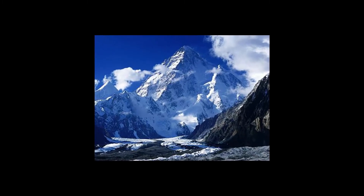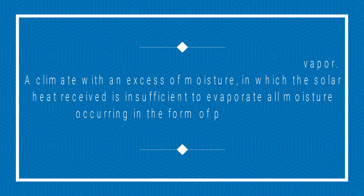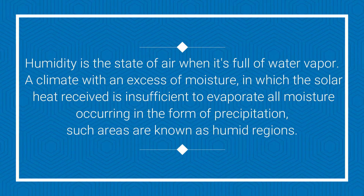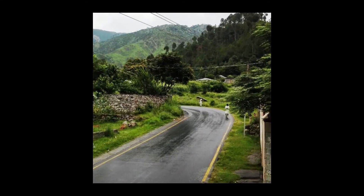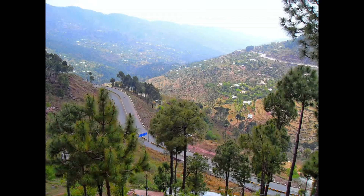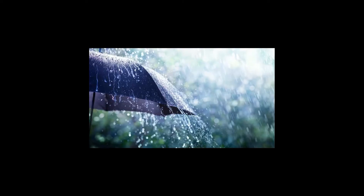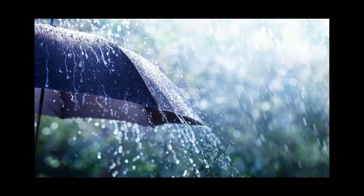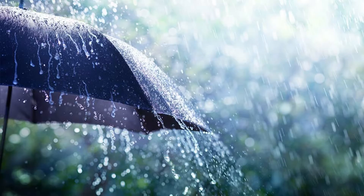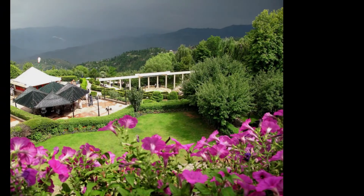Now, what are the humid mountainous regions? Humidity is the state of air when it is full of water vapors — a climate with an excess of moisture in which the solar heat received is insufficient to evaporate all moisture occurring in the form of precipitation. Such areas are known as humid regions. The areas included in humid mountainous regions are Mansehra, Hazara, Abbottabad and Murree. There is rainfall in both summer and winter seasons; mostly monsoon winds bring the rainfall. Weather during summer remains pleasant.